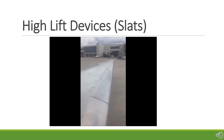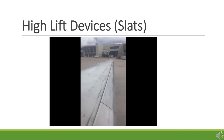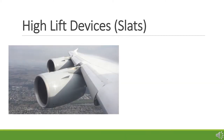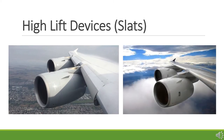One way to reduce the cruise drag caused by slots is to make them able to be closed. These movable slots are typically referred to as leading edge slats. Aerodynamically, slats work in the same way as fixed slots, but slats can be sequentially extended with the trailing edge flaps and retracted at higher speeds when not needed. Slats are, however, heavier and more complex than slots, so are most often found on larger aircraft. Most modern airliners use slats to generate high lift at low speeds.